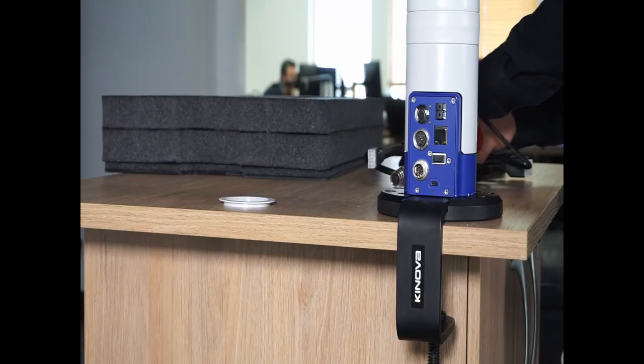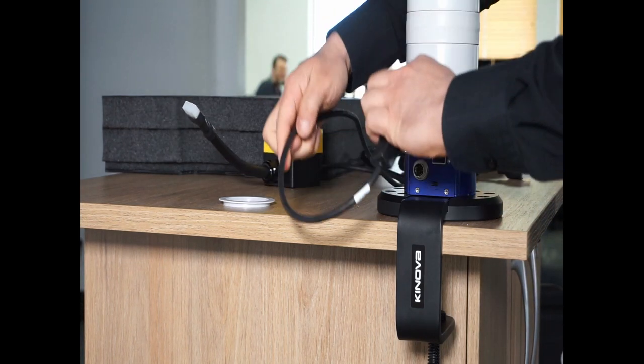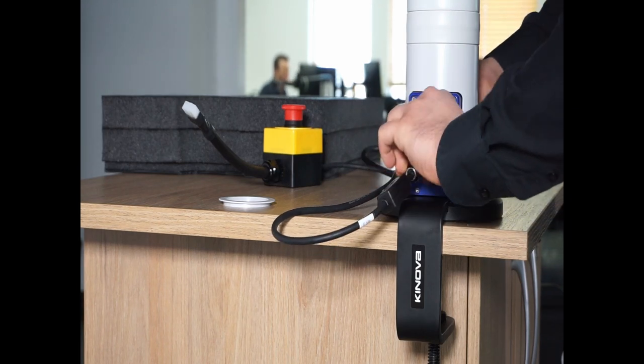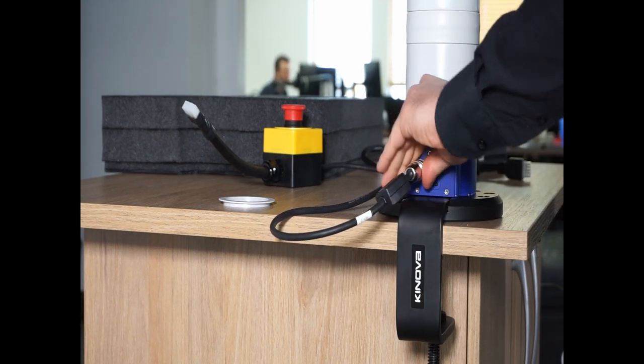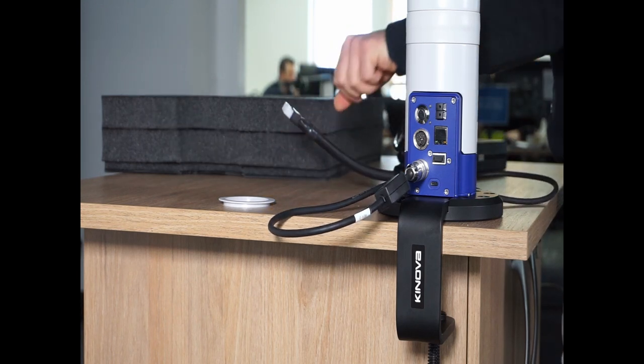To power on the robot, you first need to connect the emergency stop to the base controller. Then, connect the emergency stop and the power supply together.